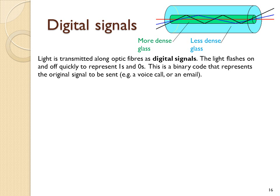Light can be transmitted along optic fibres as a digital signal. The light flashes on and off quickly to represent a code of ones and zeros, which is a binary code. Light hits the edge at an angle greater than the critical angle between the two materials, and so always totally internally reflects.